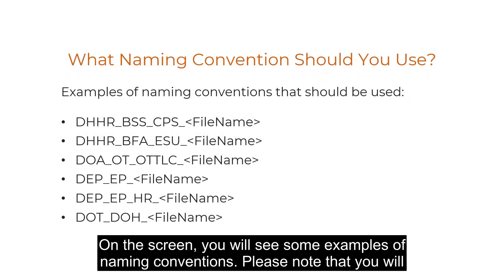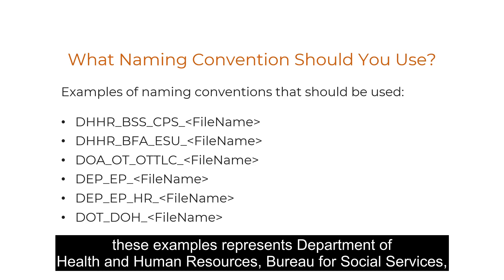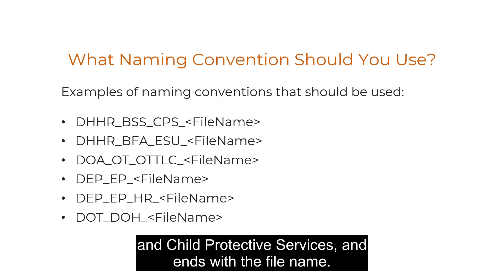On the screen you will see some examples of naming conventions. Please note that you will need to adapt them to fit your agency, department, and unit. The first instance in these examples represents Department of Health and Human Resources, Bureau for Social Services, and Child Protective Services, and ends with the file name.